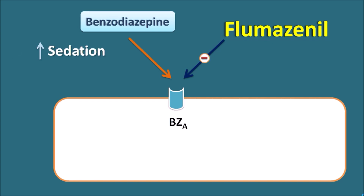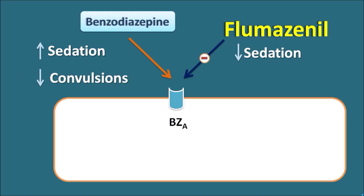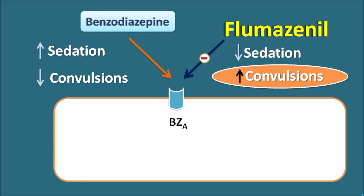Benzodiazepines increase sedation and Flumazenil, being an antagonist, decreases sedation. Similarly, benzodiazepines decrease convulsions so they can be used as anticonvulsant agents — for example, diazepam and clonazepam can be used as anticonvulsants. But Flumazenil, acting as an antagonist, may increase convulsions. This is a very important point: Flumazenil can increase convulsions in the patient, and these increased convulsions may increase the risk of death if not properly controlled.